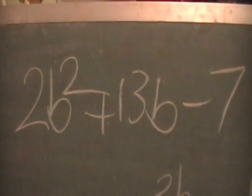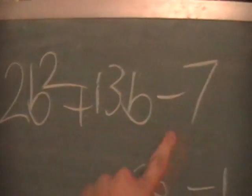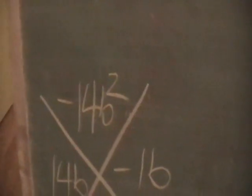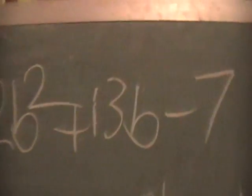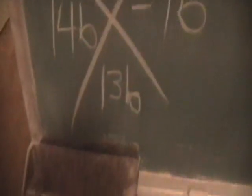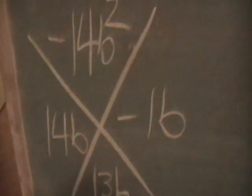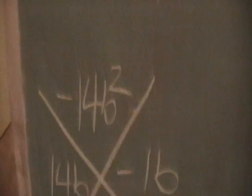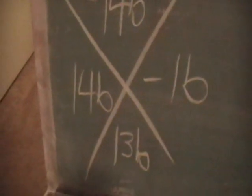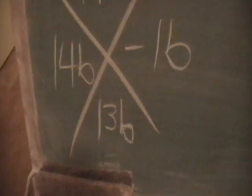2b squared plus 13b minus 7. 2b squared times negative 7 equals negative 14b squared. Put the middle term at the bottom, 13b. Now, 14b times negative 1b equals negative 14b squared. 14b plus negative 1b equals 13b.